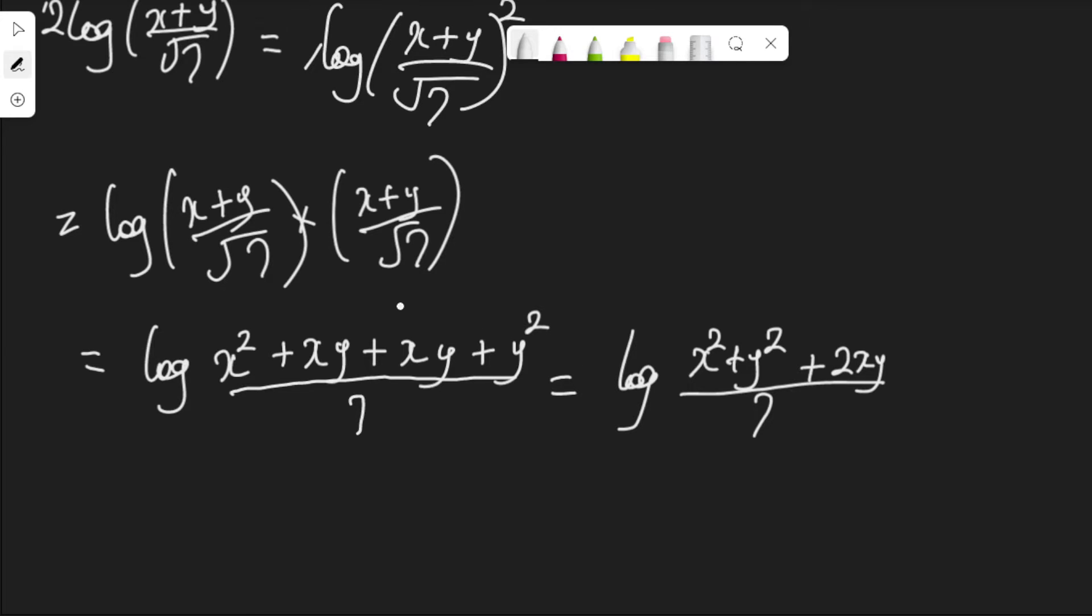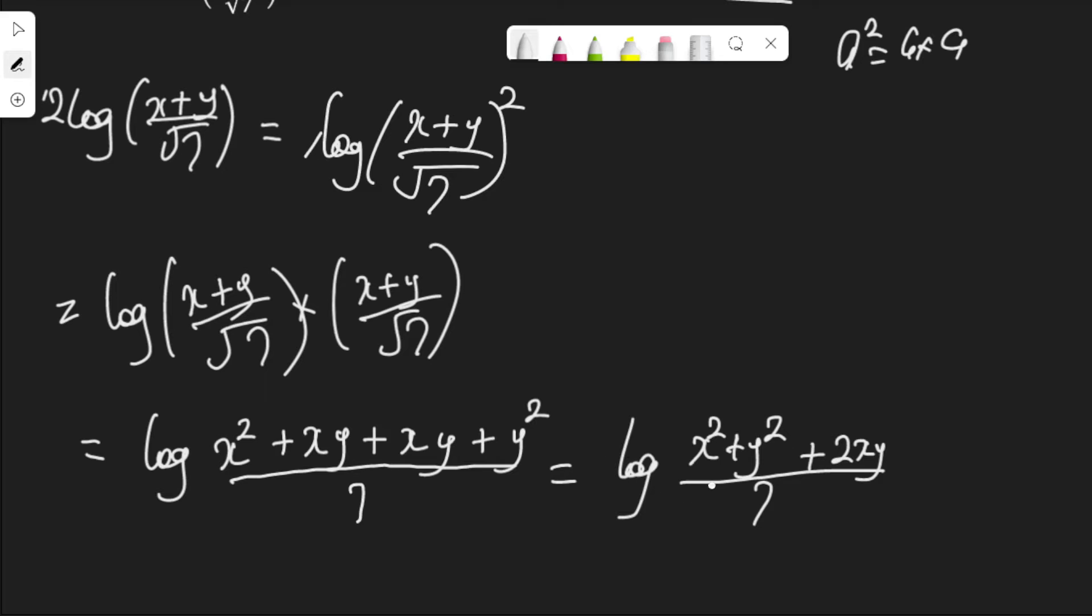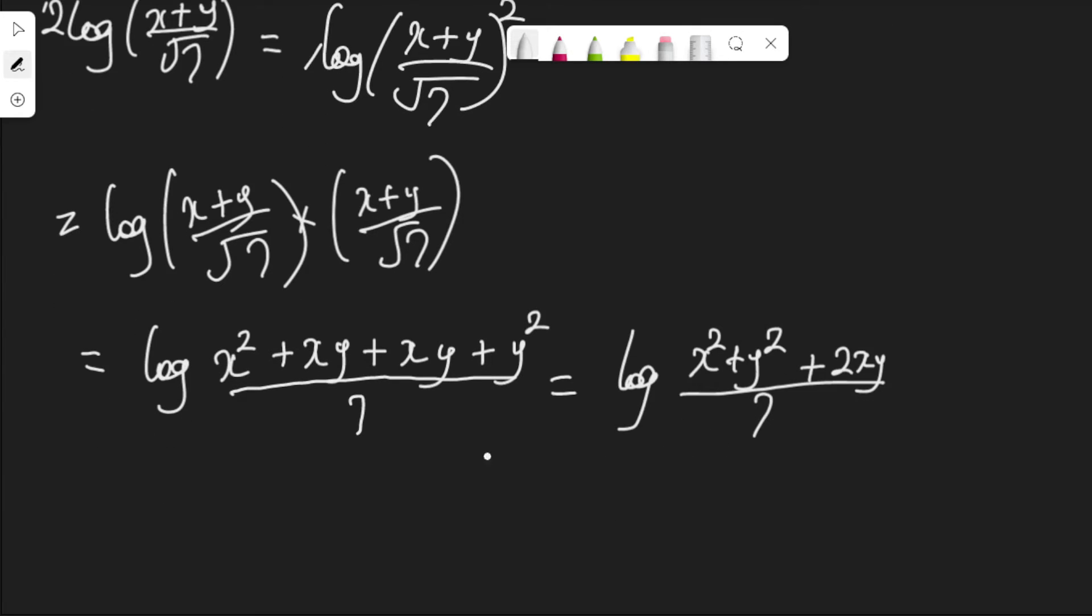But, if we go up a little, we were given that x squared plus y squared is equal to 5xy. So, this x squared plus y squared, I'm going to be replacing it with 5xy.